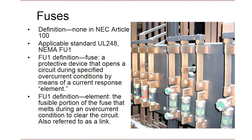Based on that definition, the question is: what is an element? NEMA FU1 describes the element as the fusible portion of the fuse that melts during an overcurrent condition to clear the circuit. Basically, it's a sacrificial conductor that melts — or even vaporizes depending on the magnitude of the current — when exposed to an overcurrent condition, opening the circuit to prevent damage to downstream devices.